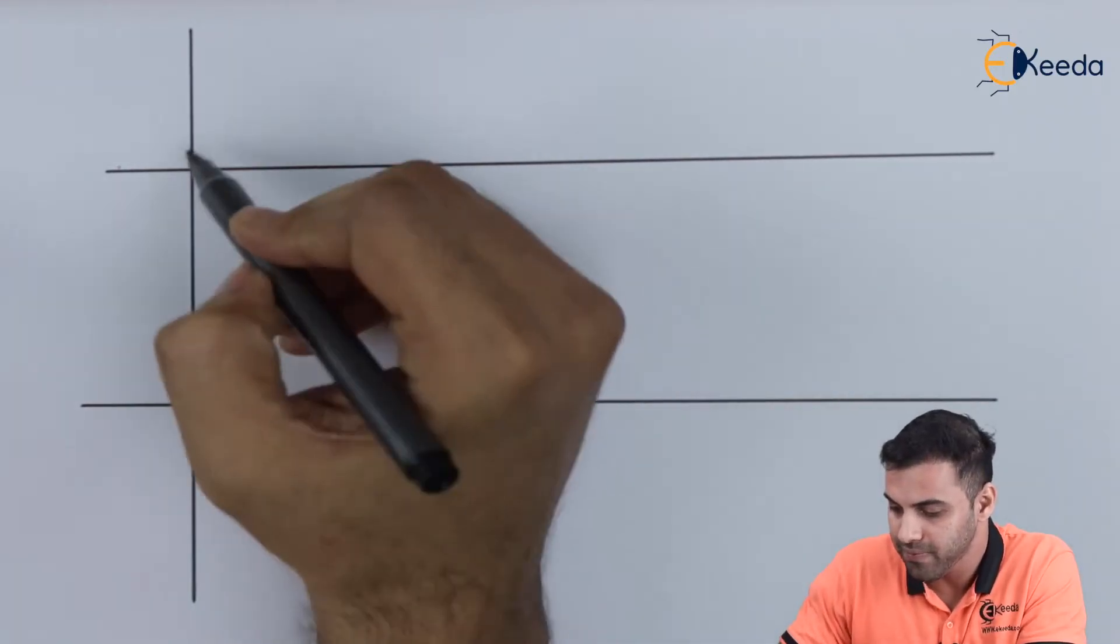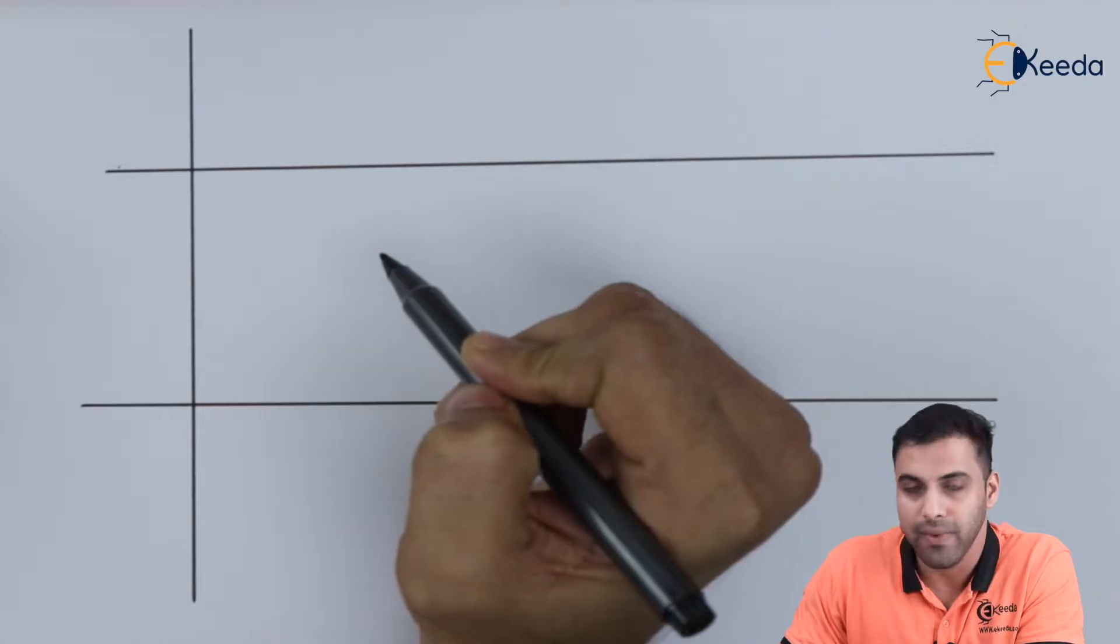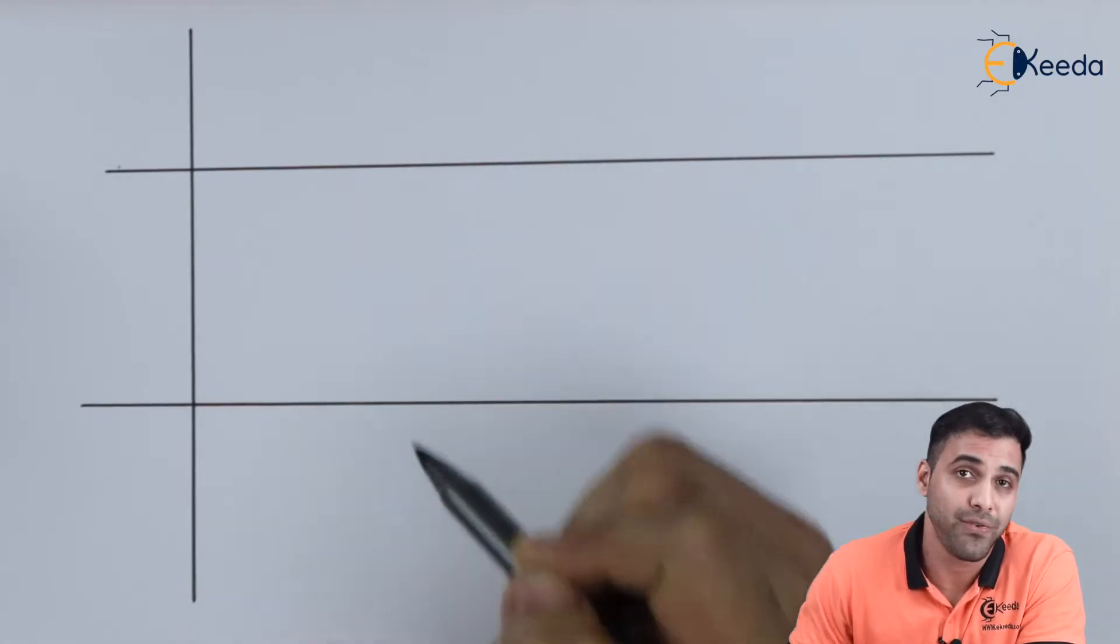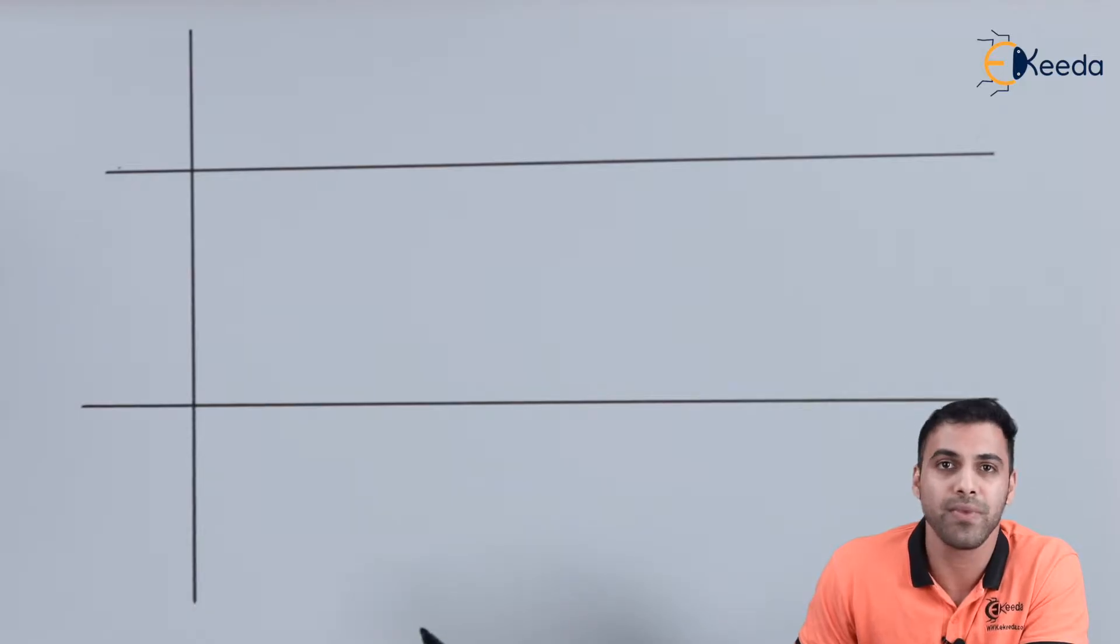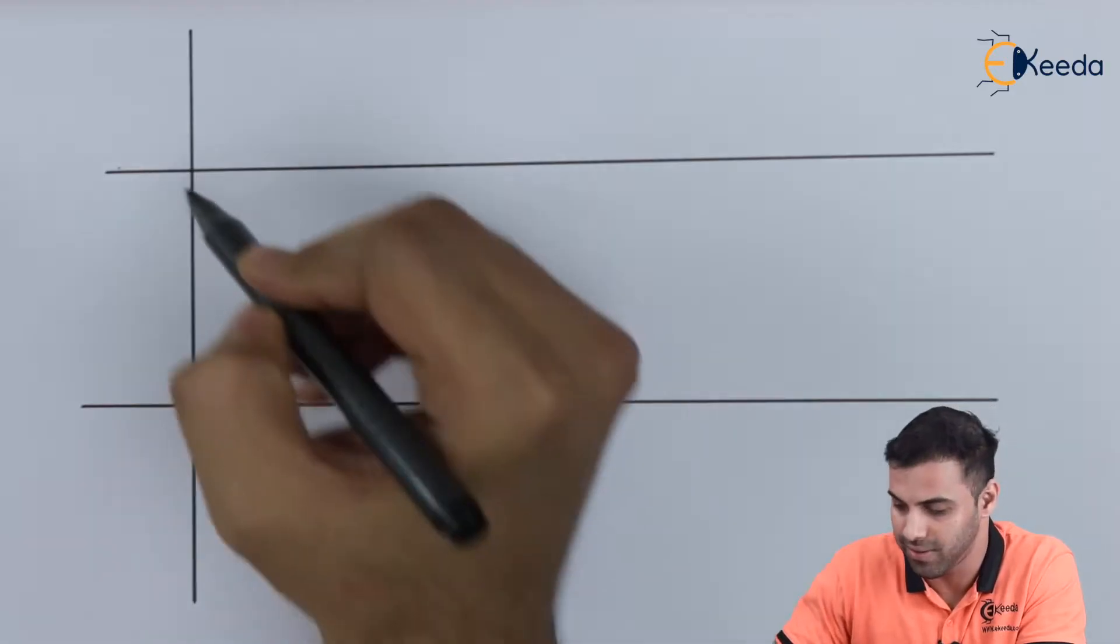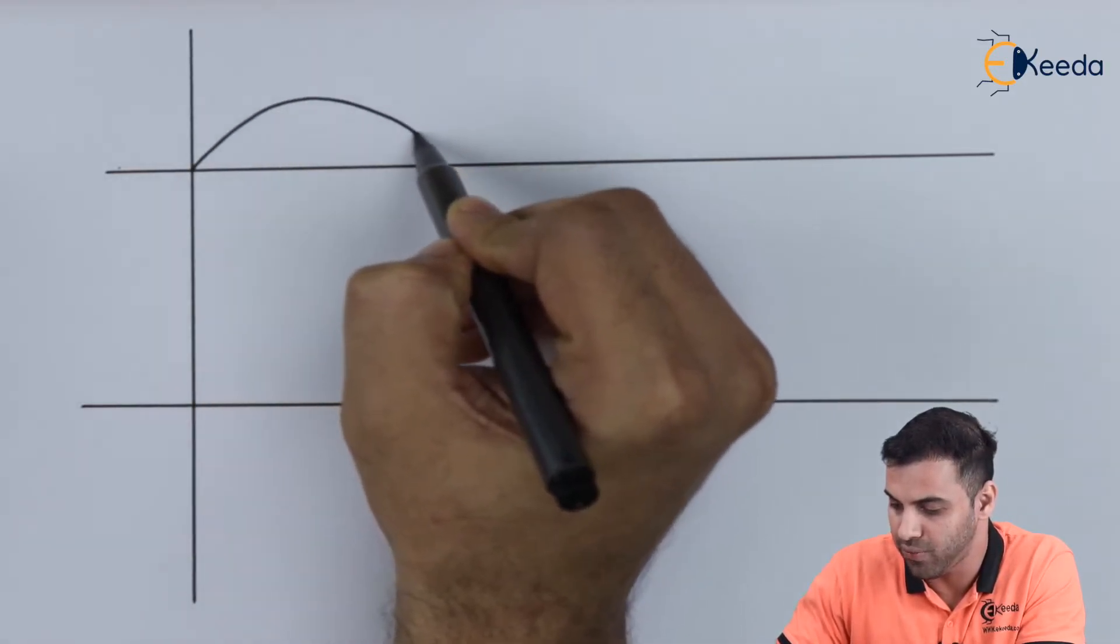If you can see here, in the earlier lectures we were using some reference constant signal as a reference signal but here we will be using a sine wave as a reference signal. Let's draw a sine wave.